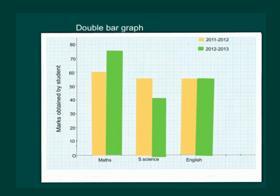And seeing the graph we can conclude that the student made good progress in maths from 2012 to 2013. He deteriorated his marks in social sciences and gave the same performance in 2012-2013 in English.